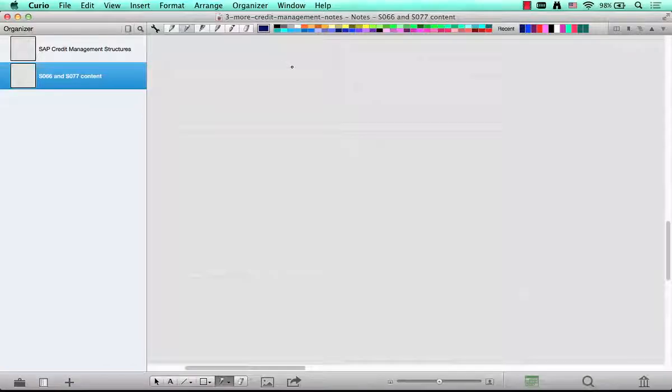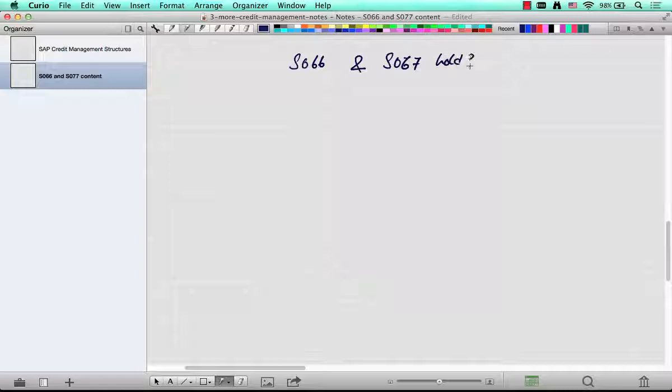The next question is, what do these tables or structures S066 and S067 hold? Meaning, what's there in these tables? Again, let's go back to our example.